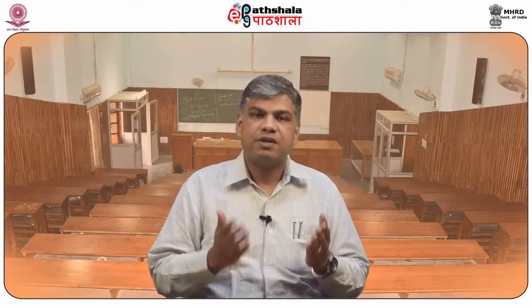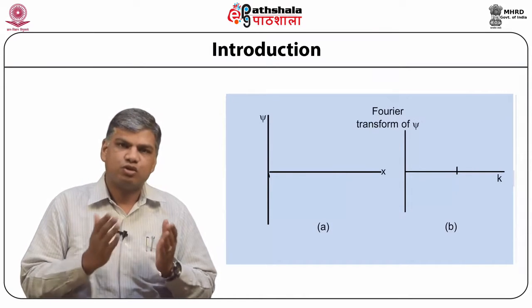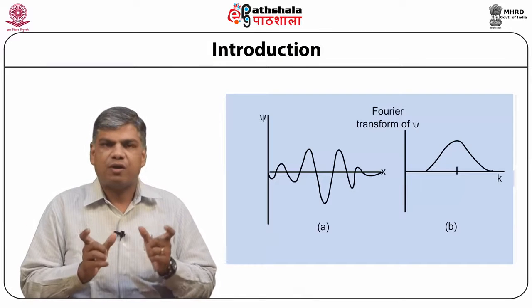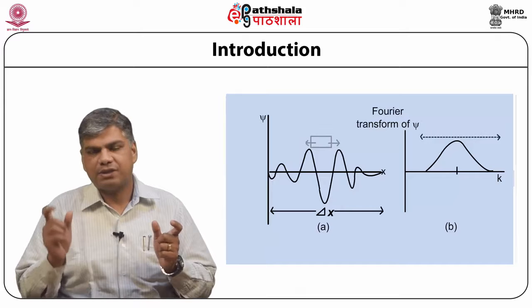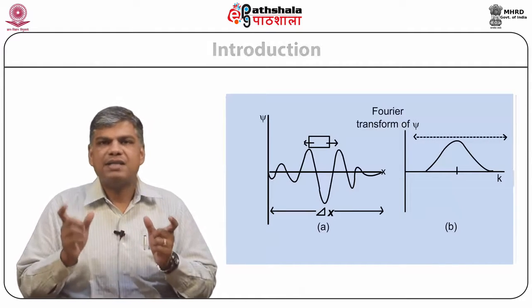Secondly, the wave function is supposed to be large where the particle is and small elsewhere, so that we can locate approximately where the particle is present. And thirdly, it describes the behavior of a single particle — that means the wave packet being discussed will describe single particle behavior. Now, let us discuss about the form of the wave packet, because the extension or spread in position delta x and in wave number delta k both depend upon the form of the wave packet.